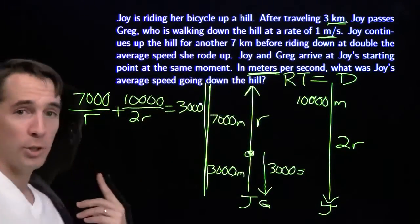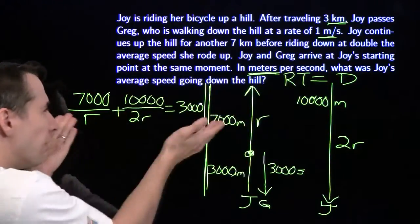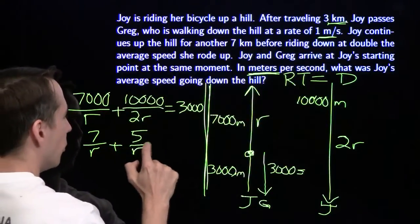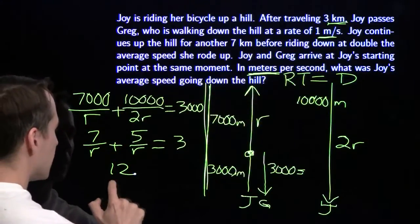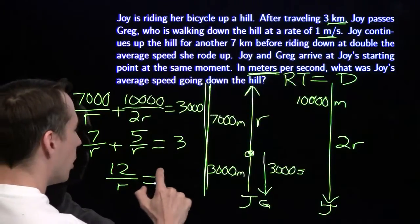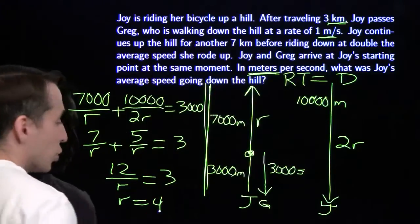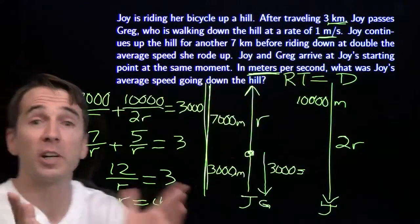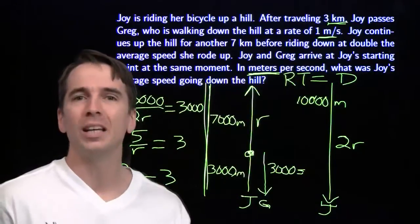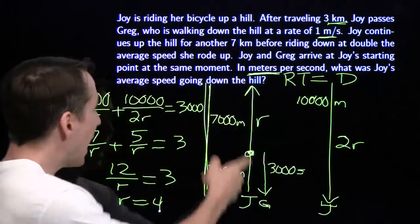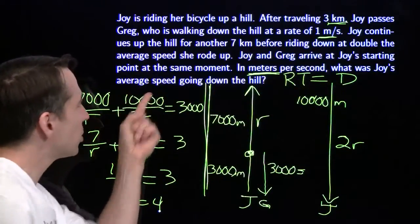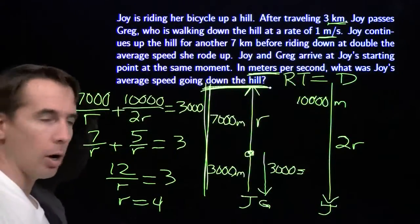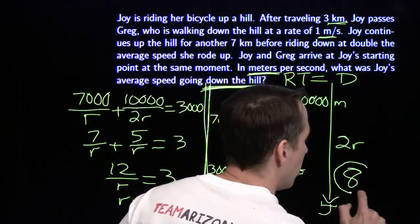Now we can clean this up. 10,000 over 2r is the same as 5,000 over r. Dividing through by 1,000 simplifies the equation to 7 over r plus 5 over r equals 3. So 12 over r equals 3, and we see that r equals 4. Now we're tempted to write down 4 and move on — but we'd be really sad if we did that, because we forgot the most important step: go back and read the question one more time. Make sure you answer the question that is asked. The question asks for Joy's average speed going down the hill in meters per second, and the speed going down is 2r, which gives us 8 meters per second.